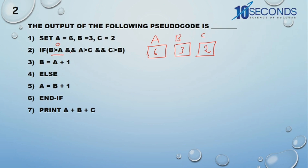Since logical AND is used in both places, once one condition is 0, you need not check the other conditions — because in logical AND, if one operand is 0, the ultimate result is 0. So it goes to the else part: A equals B plus 1, which is 3 plus 1 = 4. Then A plus B plus C is 4 plus 3 plus 2 = 9. The output is 9.